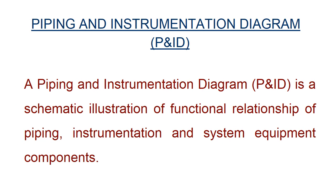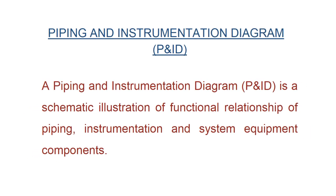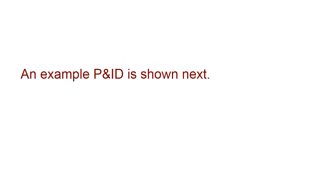A piping and instrumentation diagram, P&ID, is a schematic illustration of the functional relationship of piping, instrumentation, and system equipment components. An example P&ID is shown next.